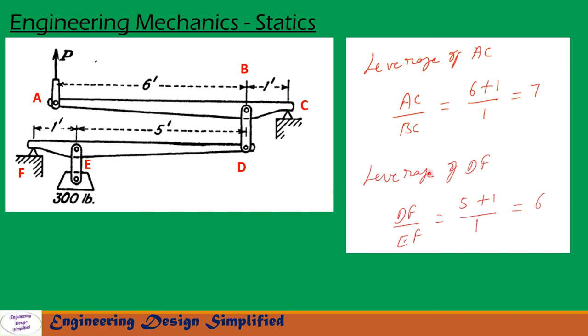Similarly, leverage of link DEF can be written as the total length DEF divided by EF. That is 5 plus 1 by 1, which equals 6. So leverage of DEF is 6 and leverage of AC is 7.